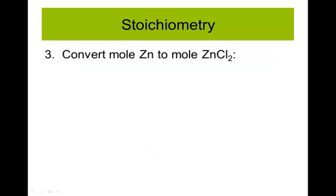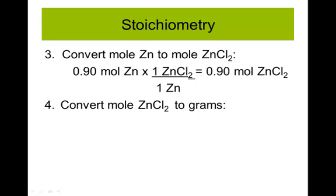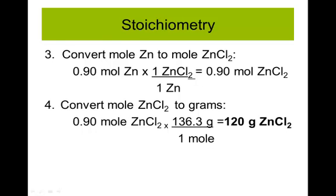Step three is to convert moles of zinc into moles of zinc chloride. I had 0.9 moles of zinc from step two. In the balanced equation, the coefficient is one in front of zinc chloride and one in front of zinc, so the ratio is one to one. That gives me 0.9 moles of zinc chloride. The last step is to multiply by the molar mass of zinc chloride — one zinc plus two chlorines from the periodic table — which is 136.3 g/mol. So 0.9 times 136.3 gives 120 grams of zinc chloride produced from 29 grams of zinc.